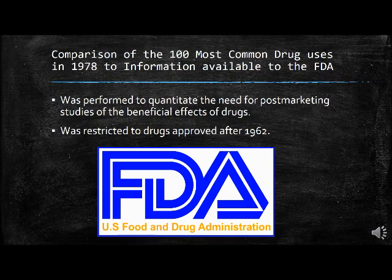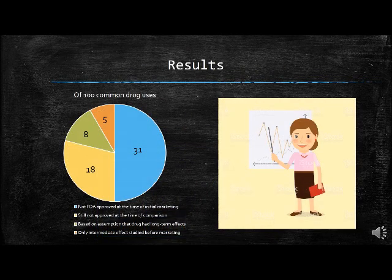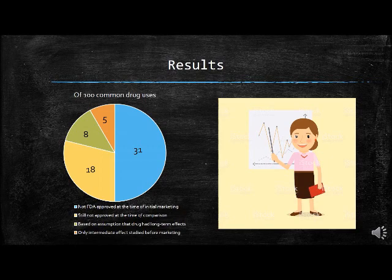To quantitate the need for post-marketing studies of beneficial drug effects, a comparison was made of the 100 most common drug uses in 1978 to information available in the FDA, restricted to drugs approved after 1962. Of the 100 common drug uses, 31 had not been approved by the FDA at initial marketing, 18 still had not been approved at the time of comparison, 8 were based on assumed long-term effects when only an intermediate effect had been studied, and 5 involved intermediate or long-term effect assumptions with only intermediate effects studied prior to marketing.